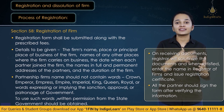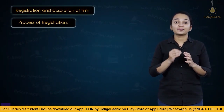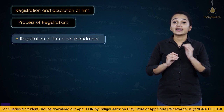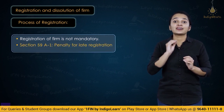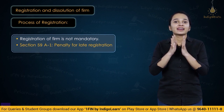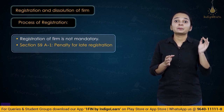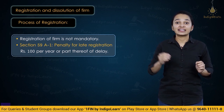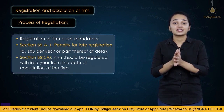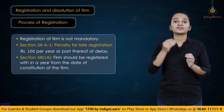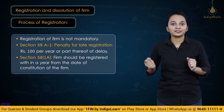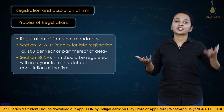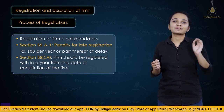Registration of a partnership firm is completely optional — it is not mandatory. However, section 59 imposes a penalty for late registration. The penalty is rupees 100 per year of delay. Section 58 states that the firm shall be registered within one year from the date of constitution, and if not registered within one year, a penalty of rupees 100 per year for every year of delay will be imposed under section 59.